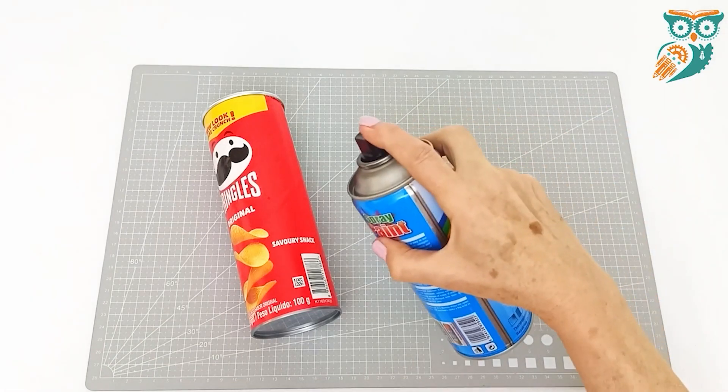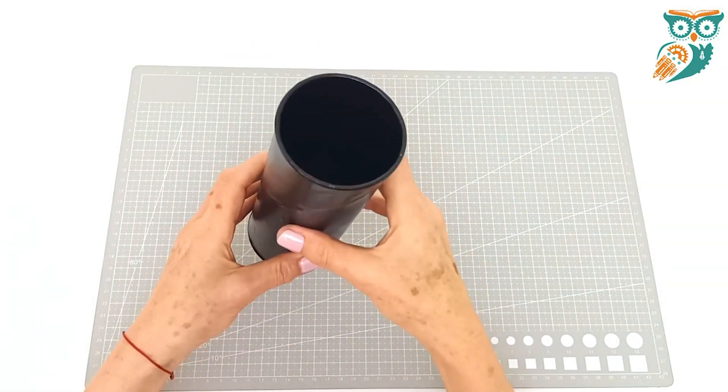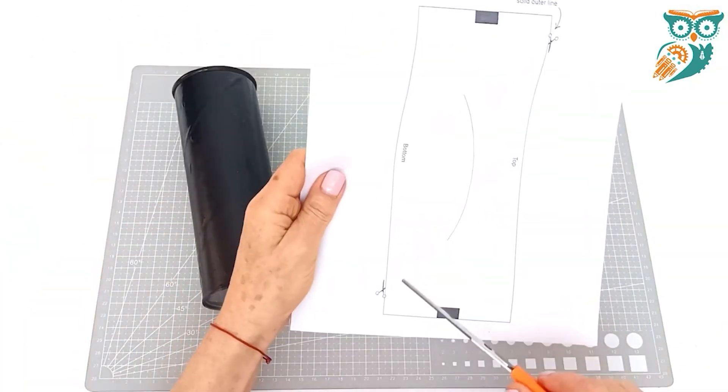So we're going to gather up our simple supplies and the first thing we're going to do is take a Pringles can and spray paint it black on the inside and the outside.